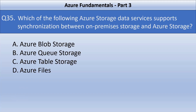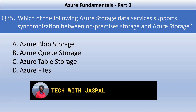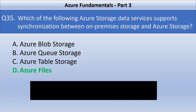Question number 35. Which of the following Azure storage data services support synchronization between on-premise storage and Azure storage? Your options are Azure Blob Storage, Azure Queue Storage, Azure Table Storage, or Azure Files. The correct answer is option D, Azure Files. It utilizes Azure File Sync to perform synchronization of files between an on-premise file server and an Azure File Share, providing a seamless hybrid cloud storage solution. Azure Blob Storage is for unstructured data storage, Azure Queue Storage is for message queuing, and Azure Table Storage is for NoSQL key-value data storage, so options A, B, and C are not correct.